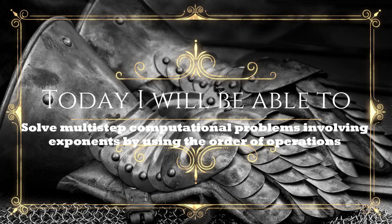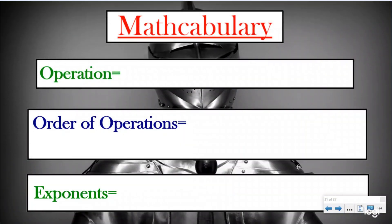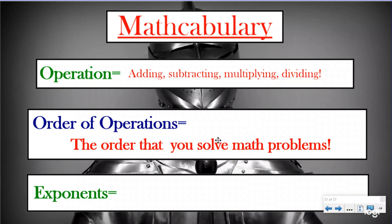Now we're going to have to work through that step of our order of operations, which leads us to our math vocabulary. The first two you already have written down. An operation is adding, subtracting, multiplying, or dividing. The order of operations is the order that we're doing those operations in to solve math problems. And exponents: exponents are repeated multiplication.